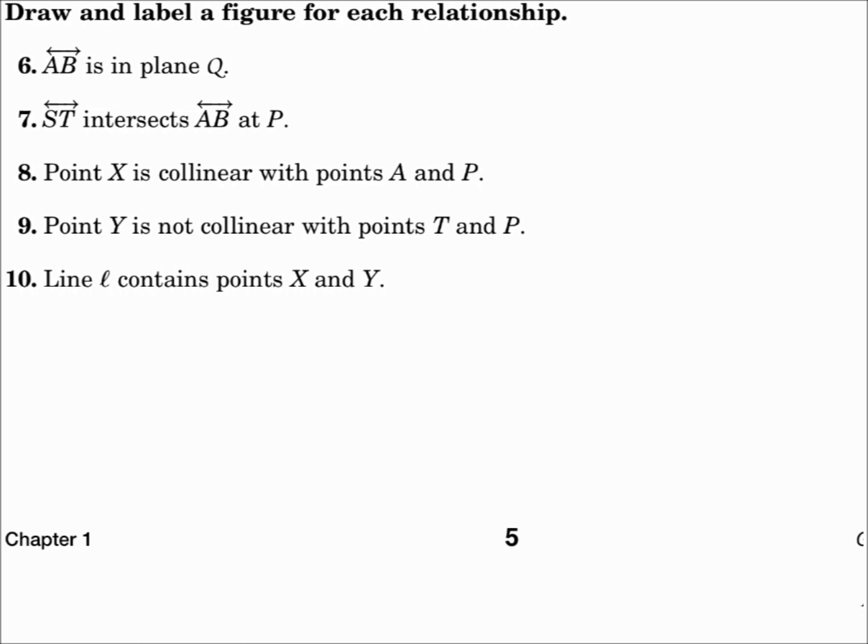Draw and label a figure for each relationship. When you draw figures like this, you want to do the biggest thing first, and then draw what is inside that. Line AB is in plane Q. Well, plane Q is the biggest, so we'll draw the plane first, capital cursive Q. And line AB is in that plane, so draw a line with points A and B.